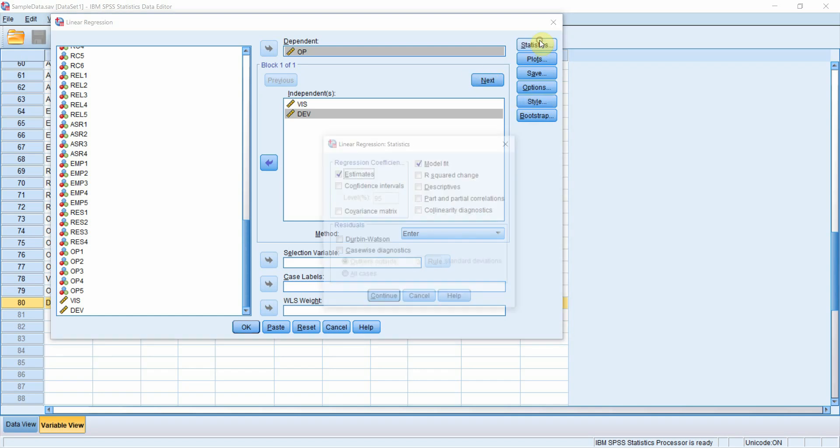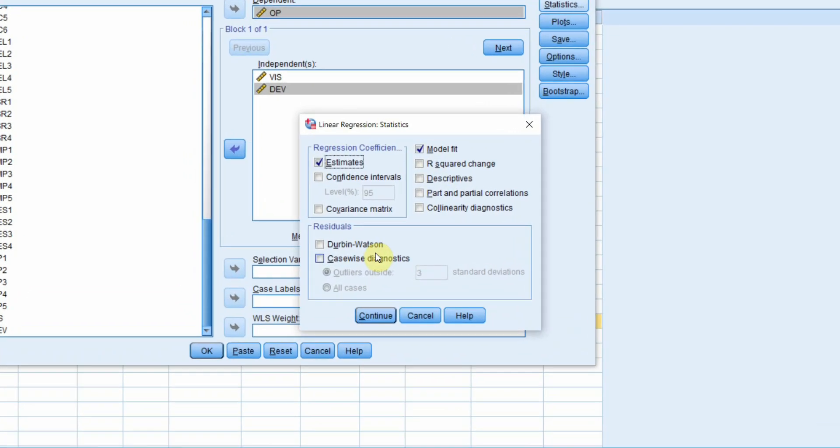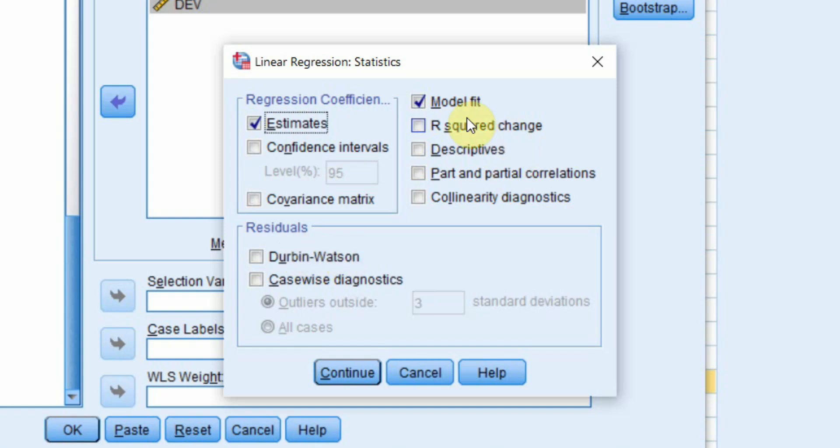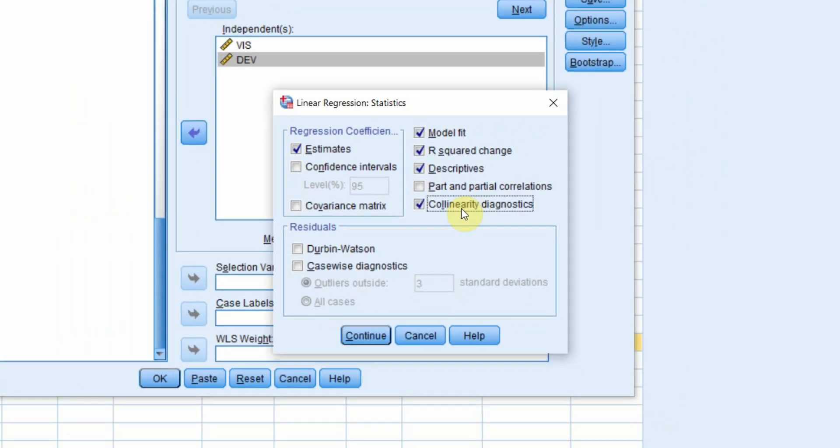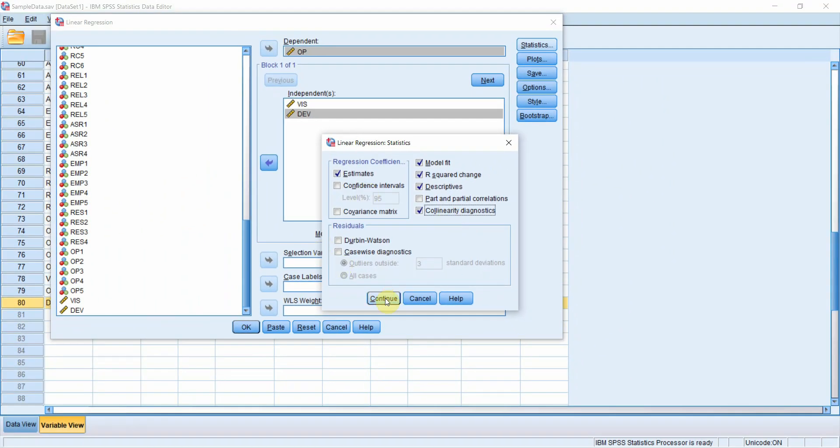We can have different statistics as well. For now we are just going to keep things simple. We can assess Durbin-Watson, R-square change, descriptives and collinearity diagnostics. Just press continue. Let's have Durbin-Watson as well.